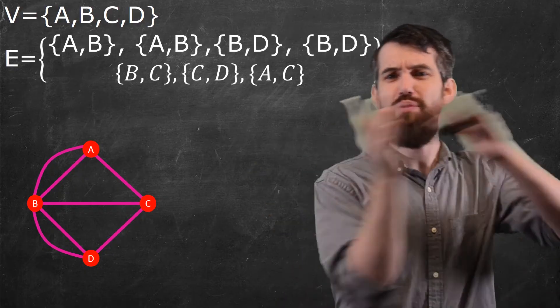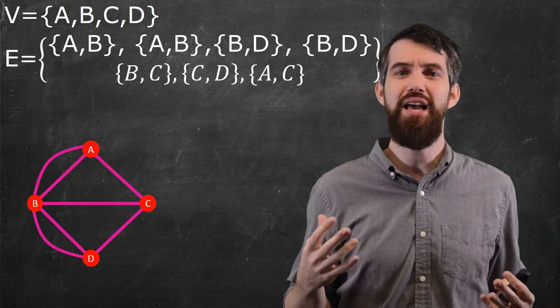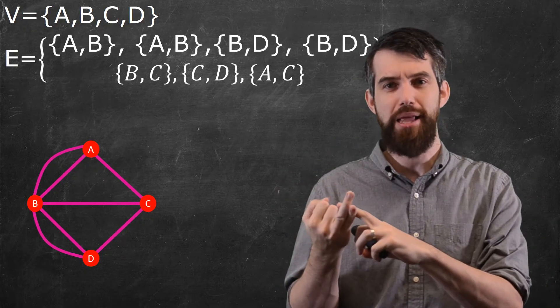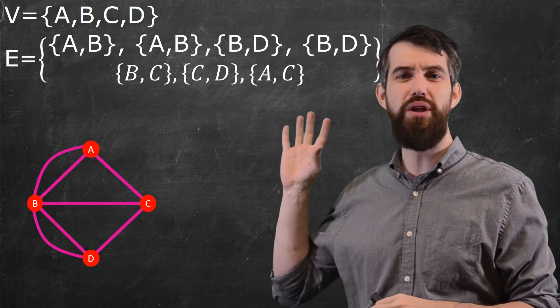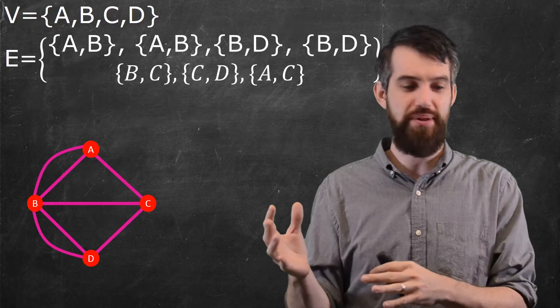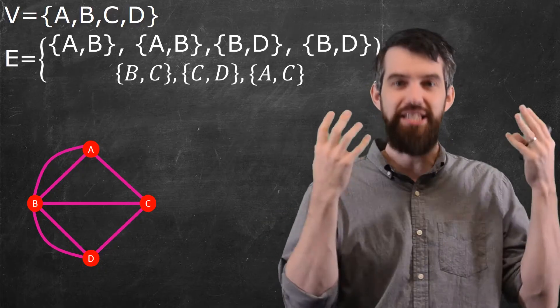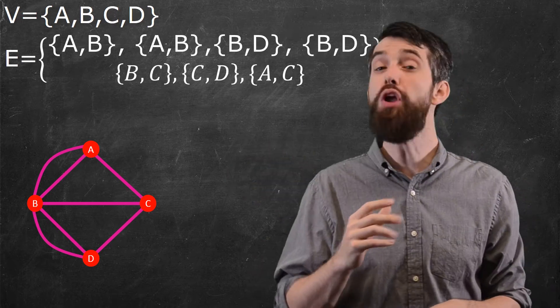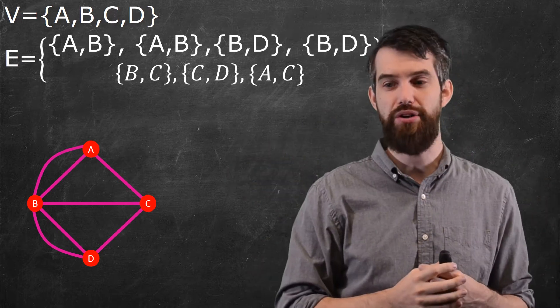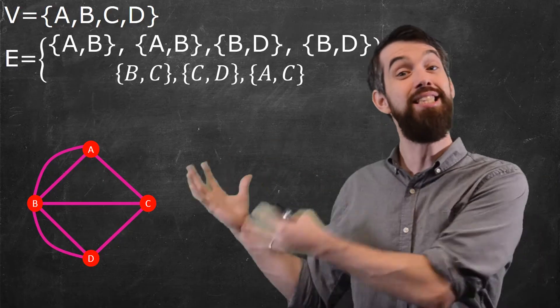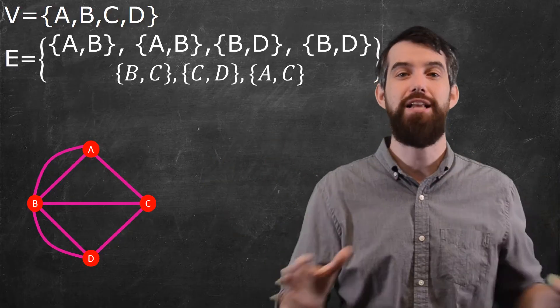Now, some of you might recall that back when we did set theory, we said that a set, it didn't matter whether you had repetitions, and it didn't matter what the order was. Well, technically this is going to be called something called a multiset, where I'm saying I do care about repetitions. If I repeat them twice, that is a different thing than repeating them once. So this is truly a multiset, but the order of it still doesn't matter. So it didn't matter whether you listed the order of the edges differently. It just says, is there a connection between C and D? That's all that matters.